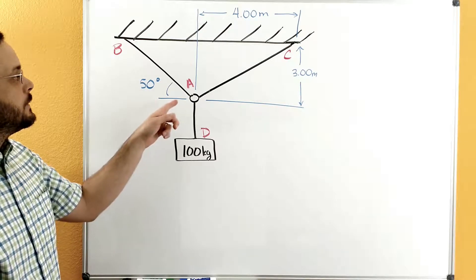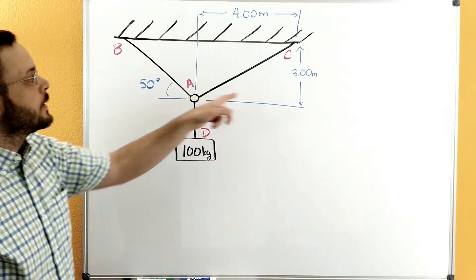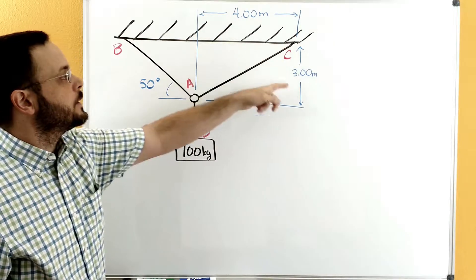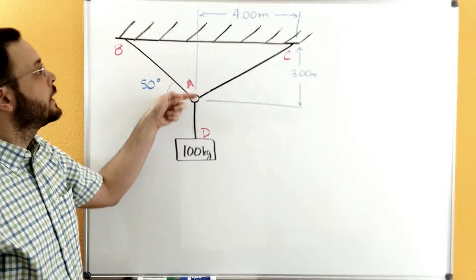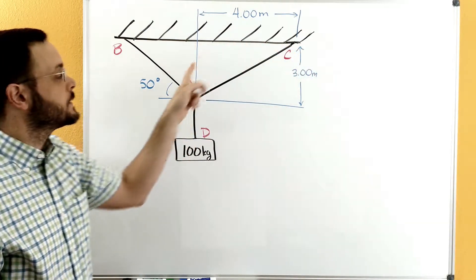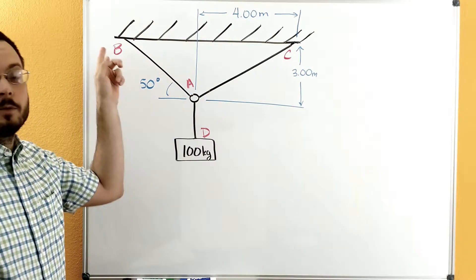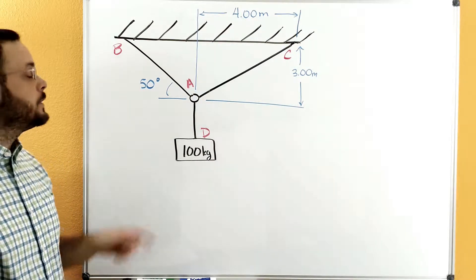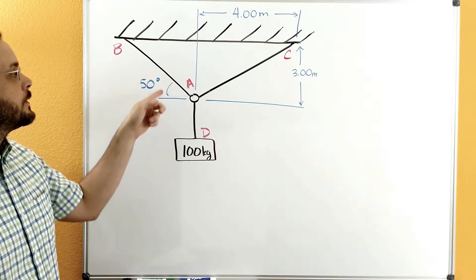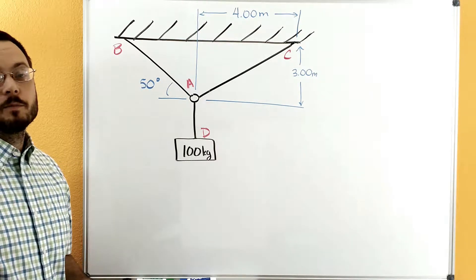You can see the dimensions that we have over here. We have a three meter drop from the ceiling down to point A. And we have four meters over from point C to point A. Over here on AB, we don't have the dimensions, but we do have that there's a 50 degree angle that AB makes from the horizontal.